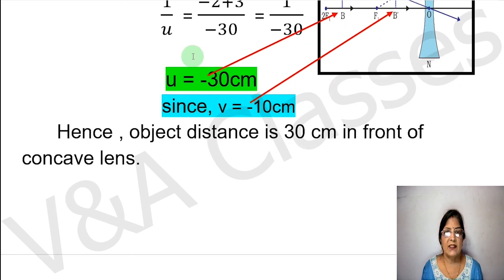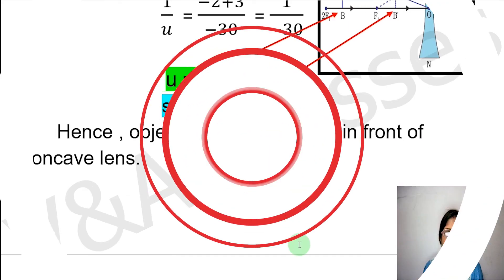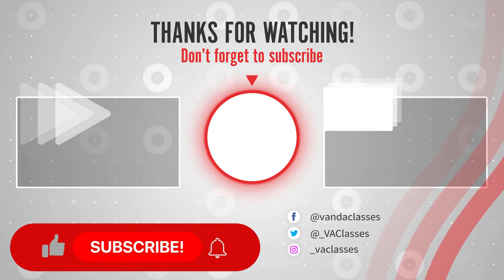And we will write this in a sentence. Hence, object distance is 30 cm in front of the concave lens. That's it. If you like this video, please like and subscribe to our videos.